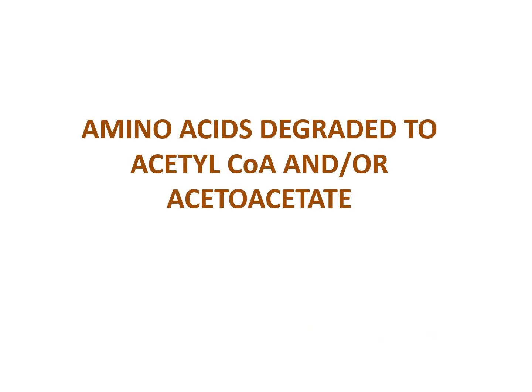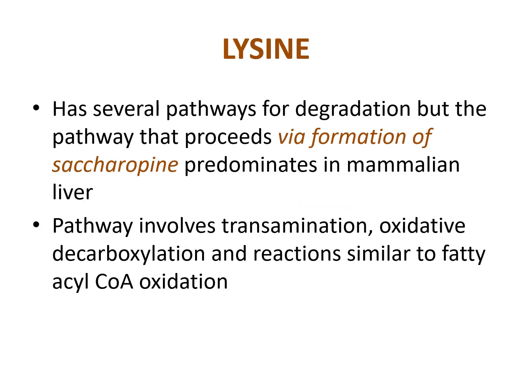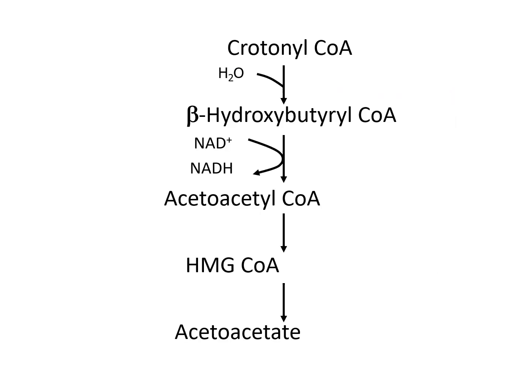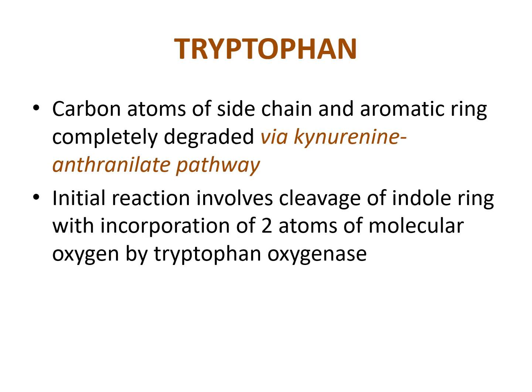Degraded to acetyl-CoA and/or acetoacetyl-CoA: lysine has several pathways for degradation, but the pathway proceeding via formation of saccharopine predominates in mammalian liver. It involves transamination, oxidative decarboxylation, and reactions similar to fatty acyl-CoA oxidation, eventually forming acetoacetyl-CoA.